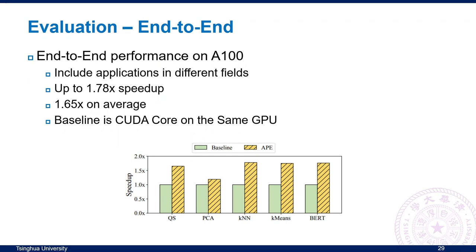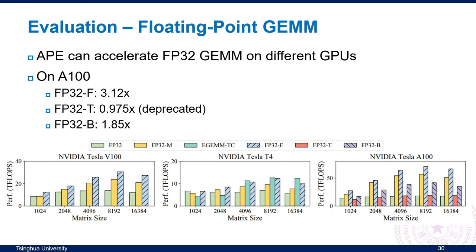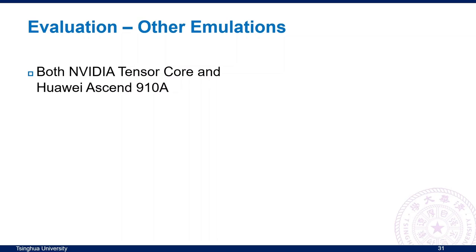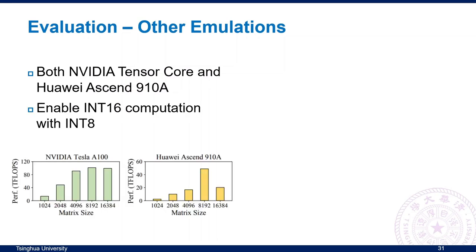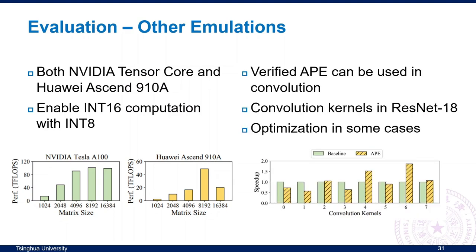We evaluate APE on NVIDIA GPUs and Huawei Ascend on various end-to-end applications, including Quantum Circuit Simulation, PCA, KNN, K-Means, and BERT. Compared to CUDA Core on the same GPU, APE can achieve up to 1.78x speedup on NVIDIA A100. On GEMM, FP32F and FP32B can achieve 3.12x and 1.85x speedup respectively over CUDA Core on NVIDIA A100. APE also supports emulating integer types on Tensor Core and Huawei Ascend, verifying our approach across various DSAs. APE's emulation method also supports convolution, optimizing kernels in ResNet-18.